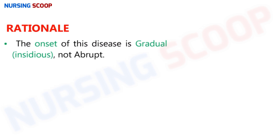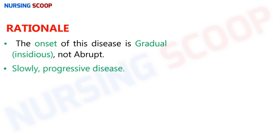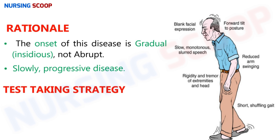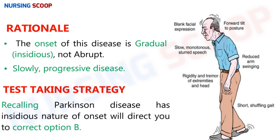Rationale: The onset of disease is gradual — it is an insidious onset, not abrupt or sudden. Insidious onset means the disease comes slowly and the patient is not aware of it. In Parkinson's disease, the first sign is tremor, the second is rigidity, and the third is bradykinesia. Patients also suffer from many non-motor symptoms. Test-taking strategy: recall that Parkinson's disease has an insidious, gradual onset, which directs you to option B.